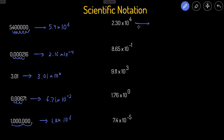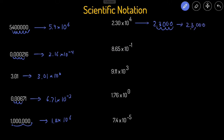Now moving on to turning scientific notation into standard notation. Since this has a positive exponent, we know the number should be greater than one. We'll move the decimal in 2.30 over four times to the right: one, two, three, four — adding two zeros — and this becomes 23,000.